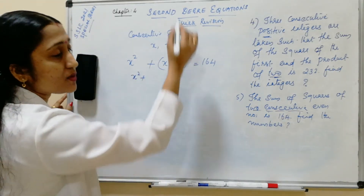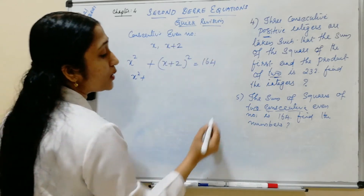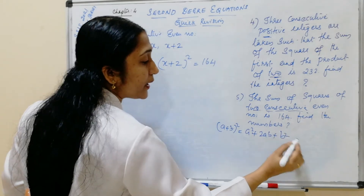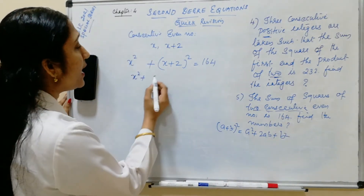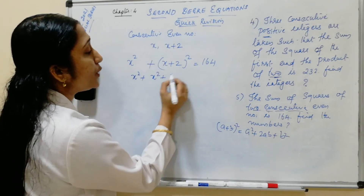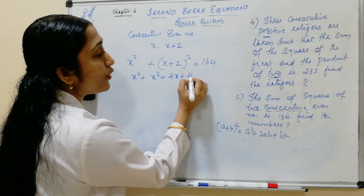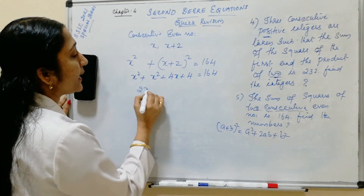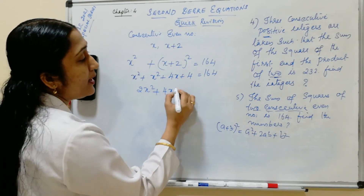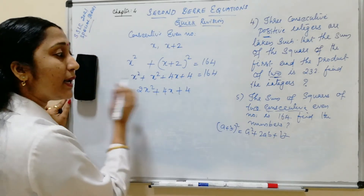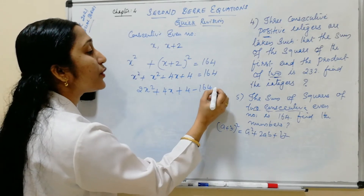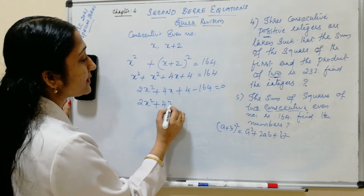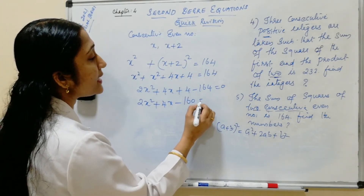Expanding: x squared plus (x plus 2) whole squared. Using (a plus b) squared equals a squared plus 2ab plus b squared, we get x squared plus x squared plus 2 times x times 2 plus 4 equals 164. That gives 2x squared plus 4x plus 4 equals 164, so 2x squared plus 4x minus 160 equals 0.